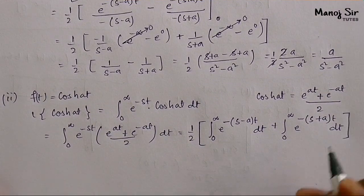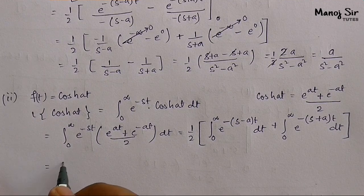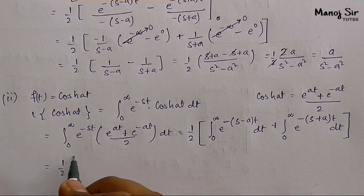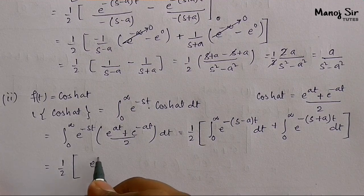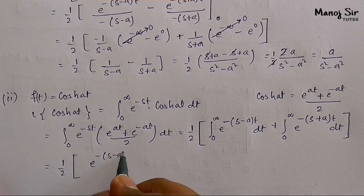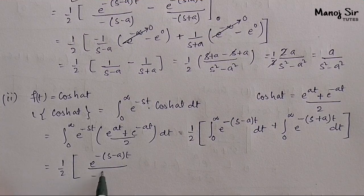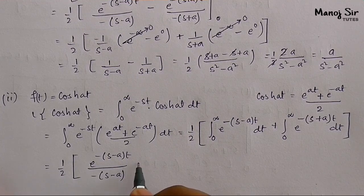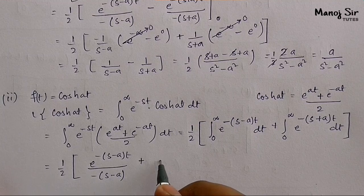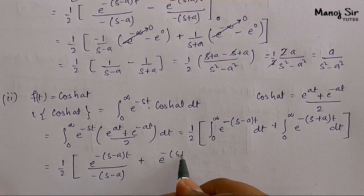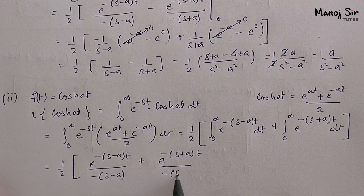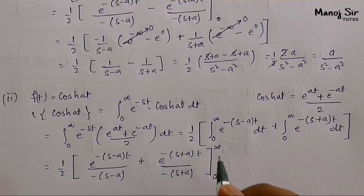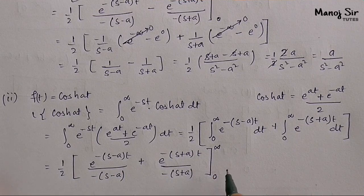Integrating with respect to t, we get: one half times e to the power minus s minus a times t upon minus s minus a, plus e to the power minus s plus a times t upon minus s plus a, with limit from 0 to infinity.